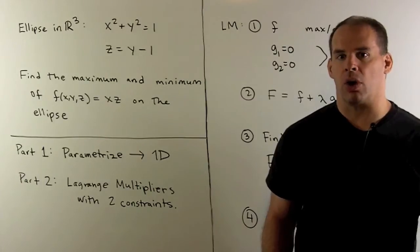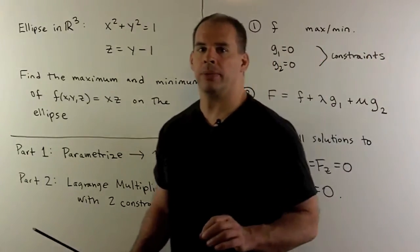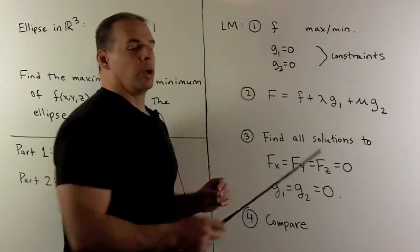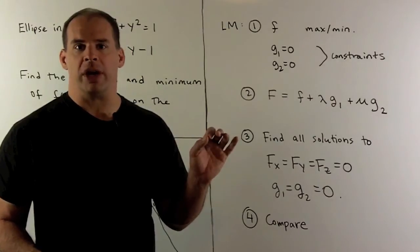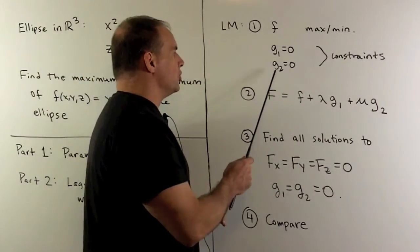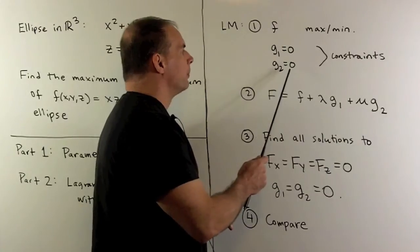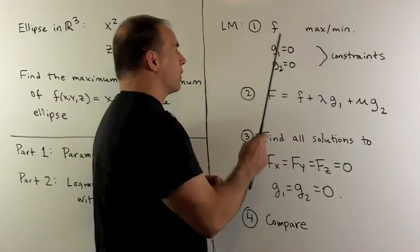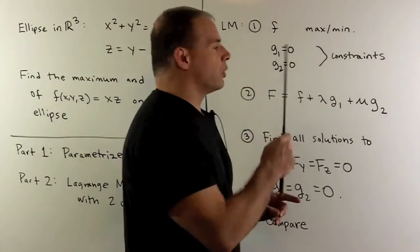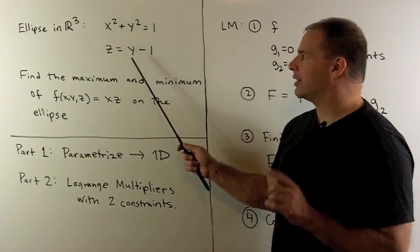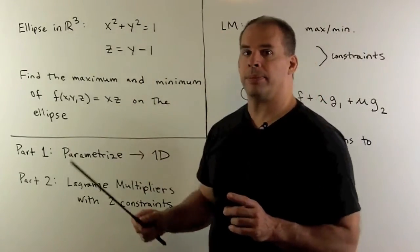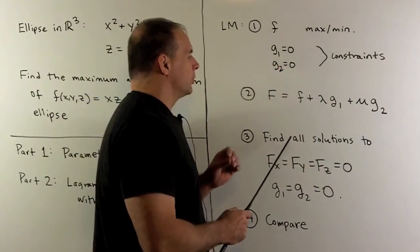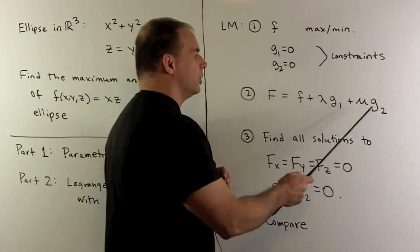We start by reviewing how we use Lagrange multipliers. We start with a function that we want to maximize or minimize. We have a set of equations, the constraint equations. In this case, we have g1 and g2, both equal to zero. These functions describe the object that we're going to maximize or minimize our function f on. Then, I'm going to define a new function, capital F, equal to little f plus lambda g1 plus mu g2.